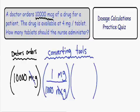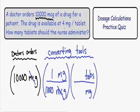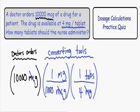We need to cancel out milligrams, which is in the numerator, so we put milligrams in the denominator of the next converting tool. In the numerator, I'm going to put tablets because that's what we need in our final answer. Remember, when using converting tools, the numerator has to equal the denominator. The drug is available at 4 milligrams per tablet — in other words, 1 tablet equals 4 milligrams. So 1 tablet goes in the numerator and 4 milligrams goes in the denominator. Now notice how the milligrams cancel, and the only units we're left with is tablets — which is exactly what we need.